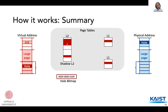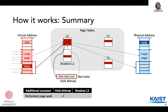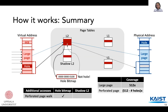To summarize page walk comparisons: perforated page walks need one additional access to the hole bitmap compared to large page walks. Large page translations have 512x coverage of regular mappings, and perforated pages have coverage of 512 minus the number of holes times regular coverage. Thus, the fewer holes in a perforated page, the more coverage the perforated page mapping offers, leading to better performance.